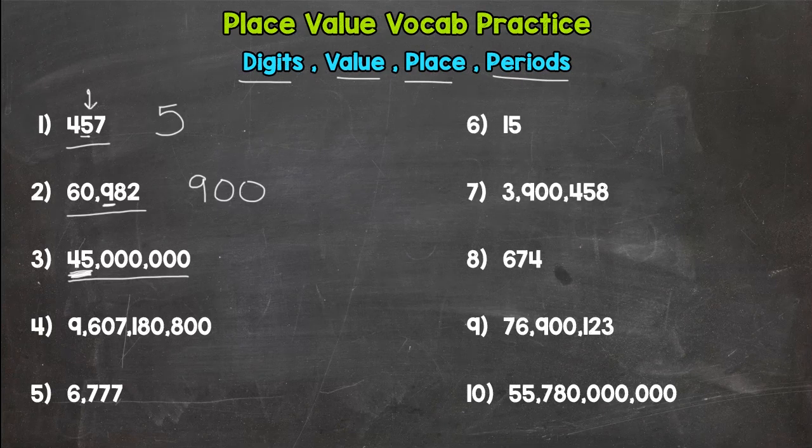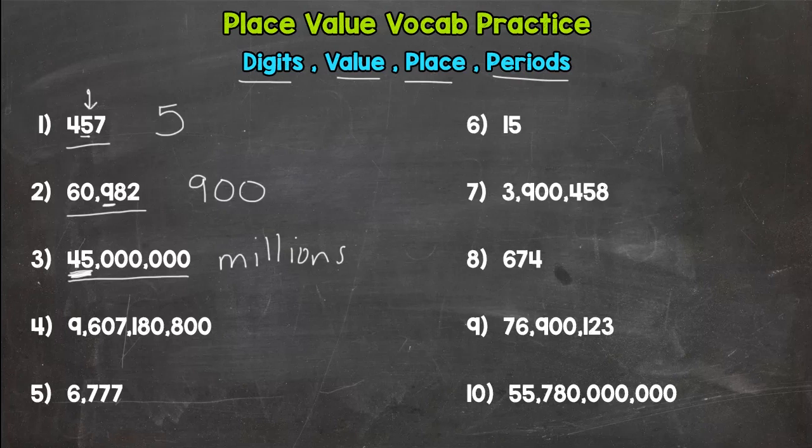And that is the millions period. Remember, periods are the groups of three numbers separated by commas. So we have the ones period right here, thousands, millions, and those periods go on forever. But this one just goes to the millions.